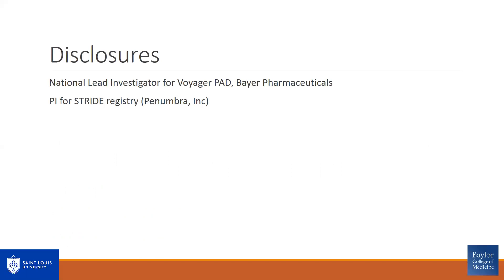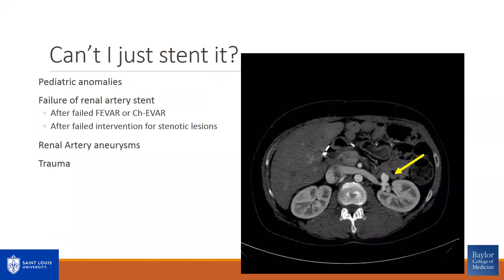I have no relevant disclosures. First of all, why is this important? Can't I just stent the renal artery, whatever the problem is? And I think usually you can, but there are a few exceptions to this.